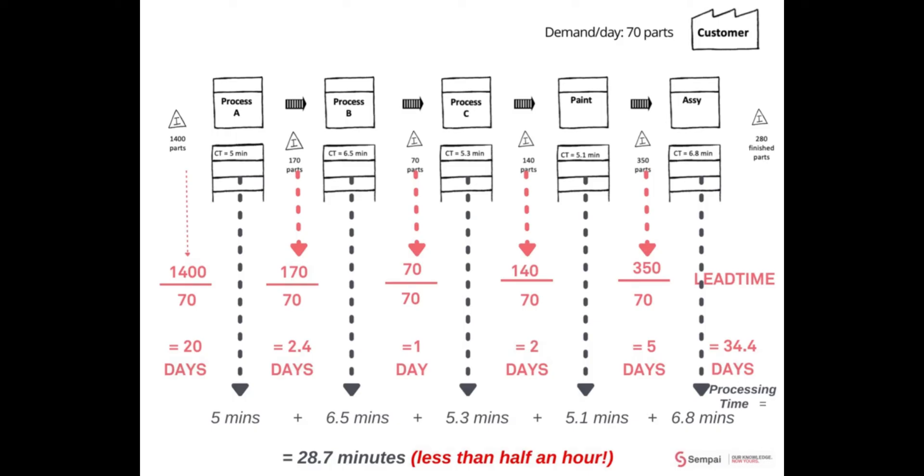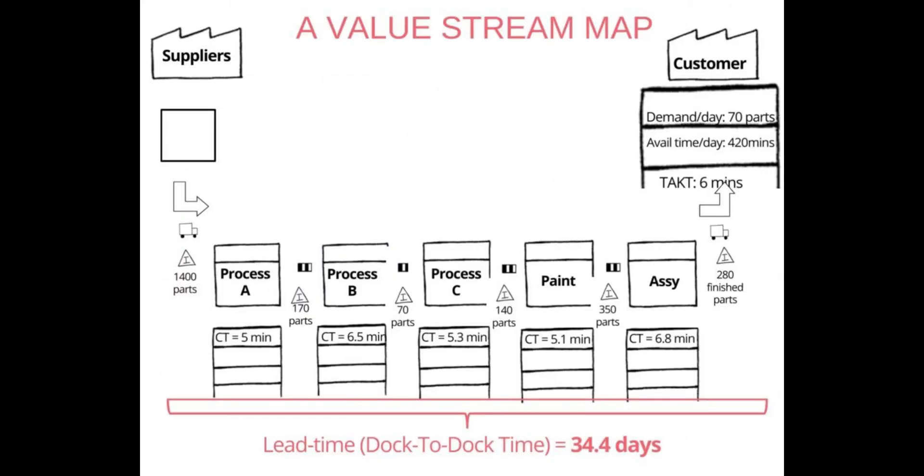So you need to be asking yourself questions. If we could notionally get one part through the entire manufacturing facility in less than half an hour, why is it taking us 34.4 days? And at the bottom there you can see I've just put on the graphic the final image—34.4 days represents that entire lead time.